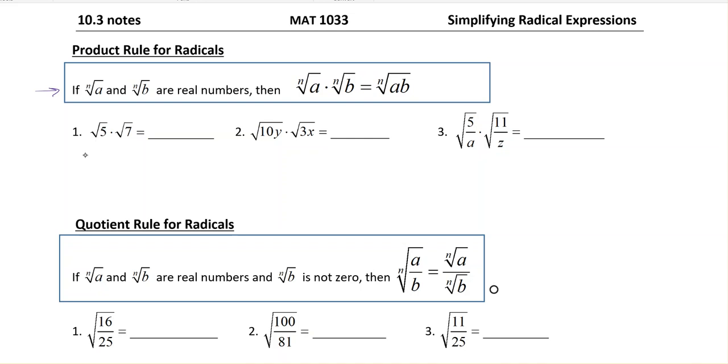So what this says is square root of 5 times square root of 7 equals the square root of 5 times 7, which is the square root of 35. So for this one, that's it. You're finished.